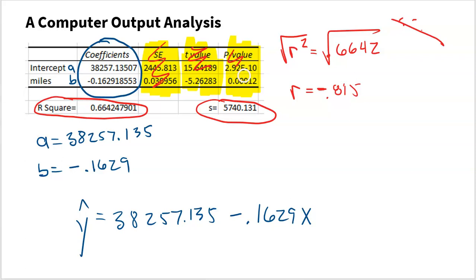These other columns you will not need. A computer output table is no different than just being given the numbers you need — you just have to know where to look: first column, alphabetical order, A first (the y-intercept), B underneath (the slope), and you're done. With that equation you can make predictions, find residual values, and interpret the slope and y-intercept. That's it for this video on how to find the least squares regression line — three methods: given directly, calculated by hand using formulas on the AP cheat sheet, or read from a computer output table.